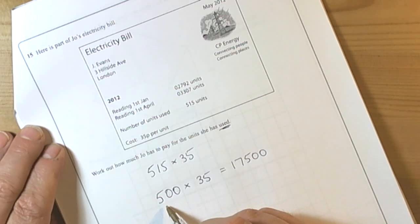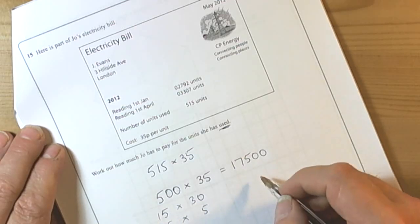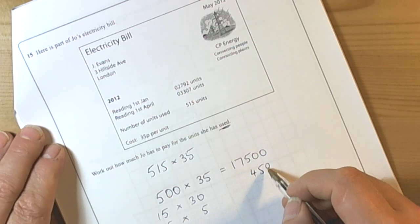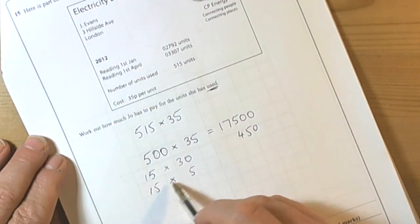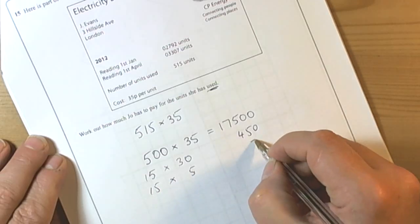And then we have got 15 times 35. So we do 15 times 30 and 15 times 5. Fifteen thirties: 15 threes are 45, so with a zero makes 450. Lining up our place values. And then we have got 15 times 5, or 10 times 5 is 50, 5 fives is 25, so that is 75.